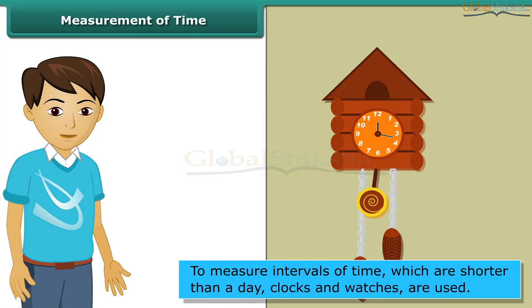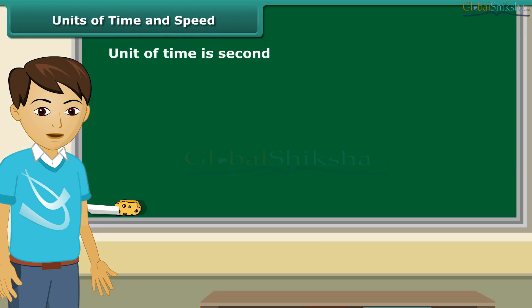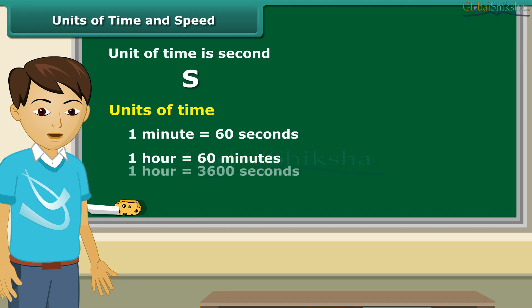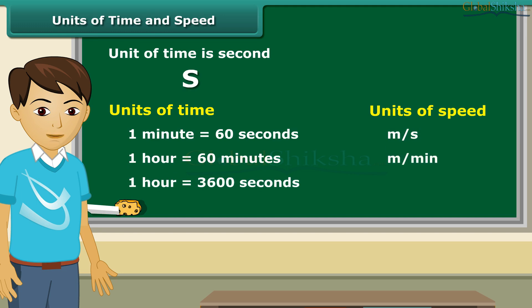To measure intervals of time, which are shorter than a day, we use clocks and watches. The basic unit of time is second. Its symbol is S. Larger units of time are minutes and hours. One minute is equal to 60 seconds and 60 minutes are equal to one hour. The basic unit of speed is meter per second. We can also express it in other units such as meter per minute and kilometer per hour. We write the symbols of all units in singular.